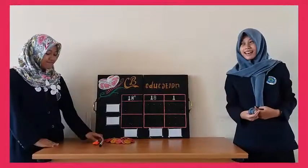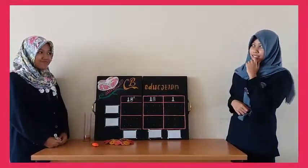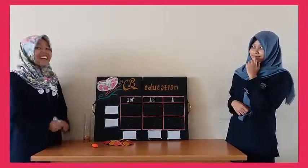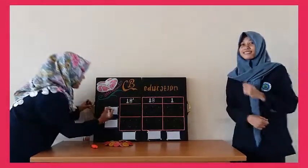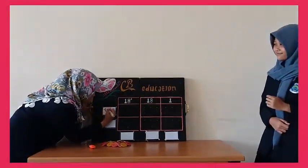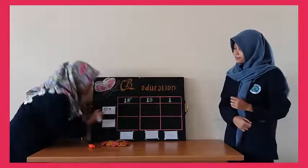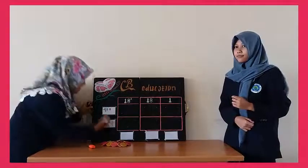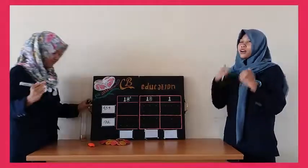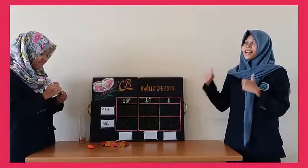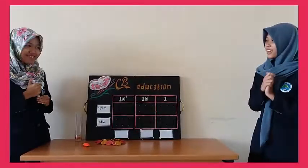Itu untuk operasi penjumlahan. Lalu, yang kedua operasi pengurangan. Langsung saja ya, ada soal seperti ini: 434 dikurangi 132.